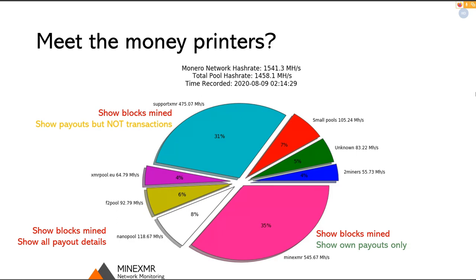Most pools show the blocks they mine. I looked up SupportXMR, MineXMR, and Nanopool as the largest, and this continues for many pools. MineXMR also shows blocks mined, as does Nanopool. Some also reveal information about transactions made to users, which allows outsiders to form a list of all outputs the pool has controlled. SupportXMR doesn't show specific payout transactions - they say how much was sent, which is much better than revealing exact transactions and makes tracking more difficult, though timing attacks are still possible. Nanopool shows all payout details including specific Monero transactions to users.